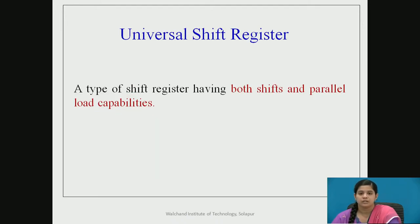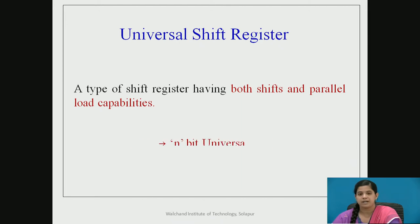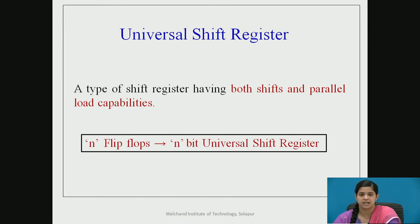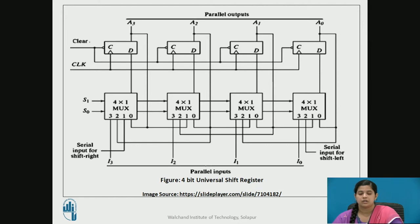The universal shift register is nothing but a type of shift register having both shift and parallel load capabilities. It is a kind of bi-directional shift register in which the input can be given parallelly or serially, and the output can also be taken in parallel or serial form. Depending on how many flip-flops are used in the design, we can call it an n-bit universal shift register. For example, if we use 5 flip-flops, we call it a 5-bit universal shift register.